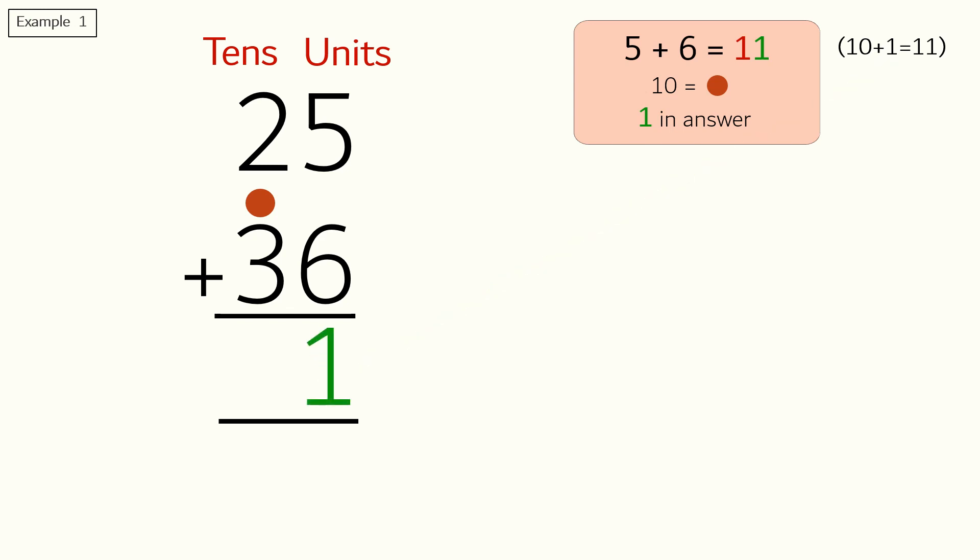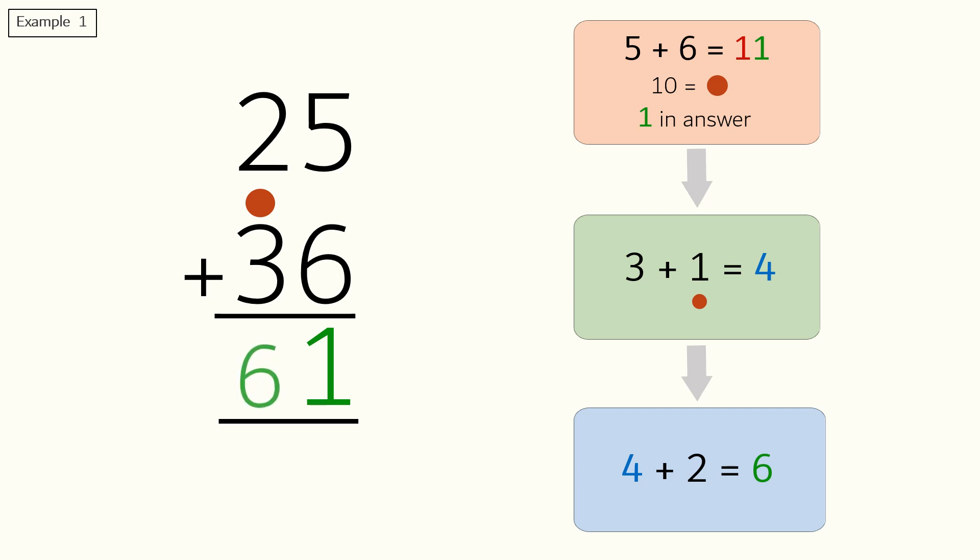Moving on to the tens side, whenever the dot is above a digit it represents one. So we will add the dot or one to the digit three, so three plus one is equal to four. Next we will add four and two which is equal to six. We will write the six in the answer section and our final answer is sixty-one.